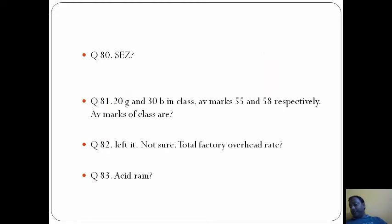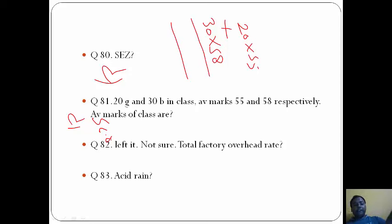Special Economic Zones are developed to promote investment from domestic and foreign resources - that is option D. Twenty girls and 30 boys in class, average marks 55 and 58 respectively. The average marks of class are D, that is 56.8. How to calculate it: 20 into 55 plus 30 into 58, divided by 50.